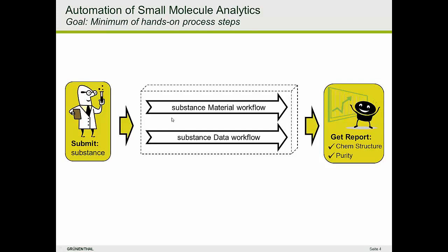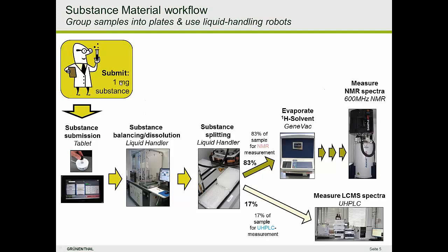We've done some work on the substance material workflow. In a typical scenario, we submit one milligram of substance — either from chemists or whoever handles the substance — into a little glass vial with a barcode. You can choose between one or two solvents and one out of three NMR methods. That vial is put on the inbox of a liquid handling machine, which balances and dissolves the substance in an organic solvent, then splits that solution into two 96-well microtiter plates — one for LC-MS and one for NMR measurements. So you only submit one sample and get both LC-MS plus NMR analytics done.